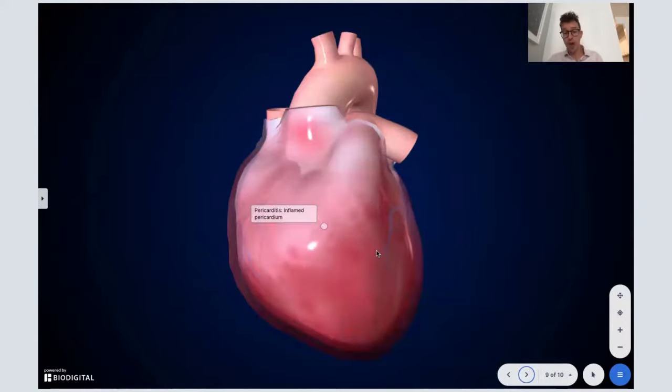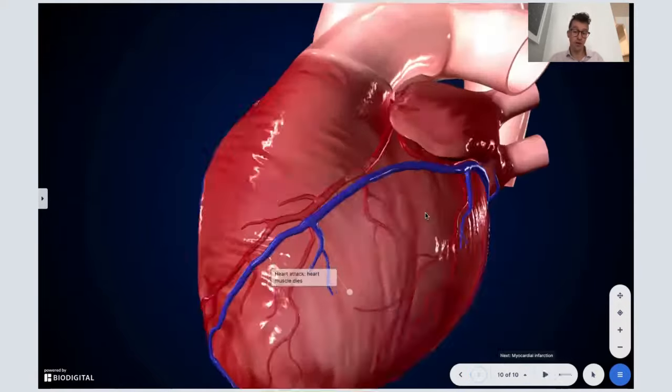Another thing that can happen is called pericarditis, which is inflammation of the fluid-filled sac that surrounds your heart. That could be a complication of myocarditis. And then finally, myocardial infarction, also known as a heart attack.